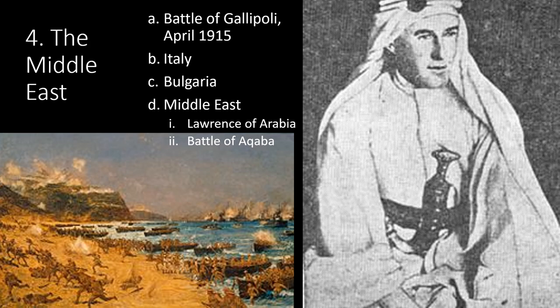In the Middle East, the Battle of Gallipoli in April 1915 saw the British Empire — consisting of British, Canadian, New Zealander, and Australian soldiers — attempt to break through the Balkans and secure the Dardanelles Straits. They landed on the wrong beach, never met their objectives, and were soundly defeated. In May 1915, Italy entered the war. Bulgaria entered the war in September 1915 on the side of the Central Powers, helping Austria-Hungary eliminate Serbia from the war.